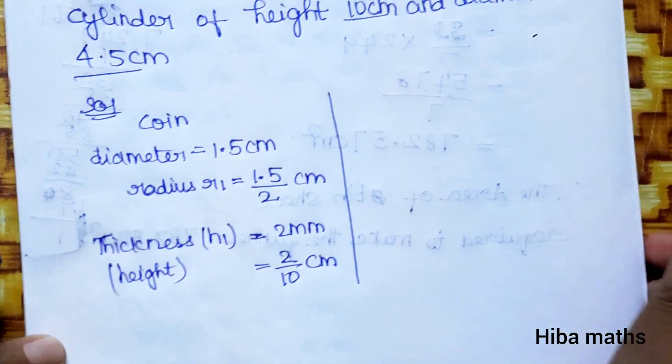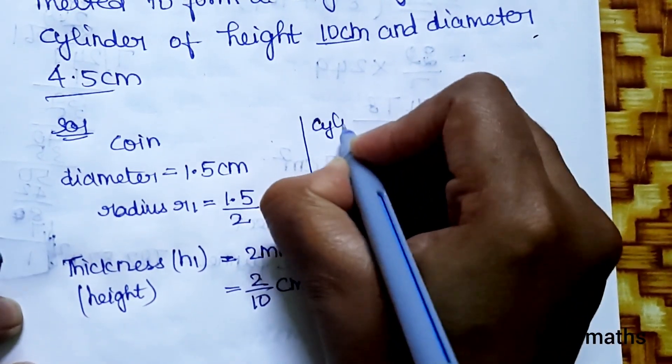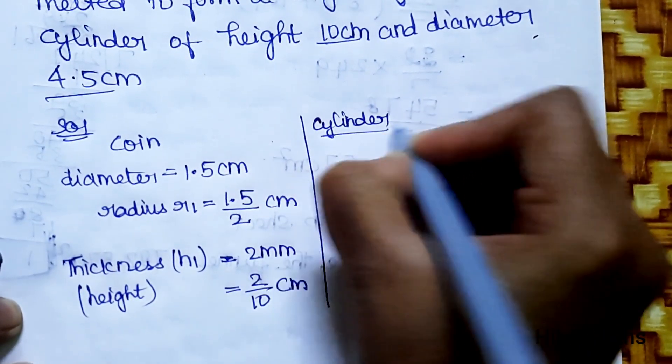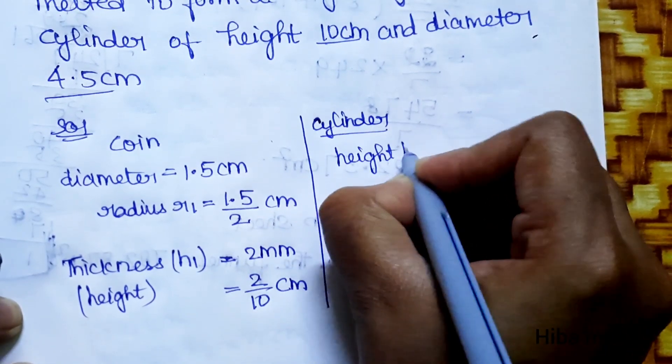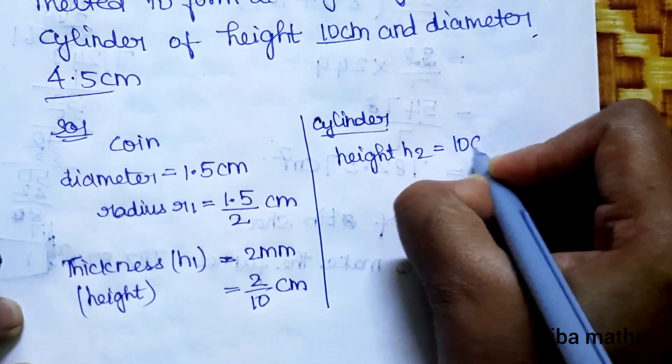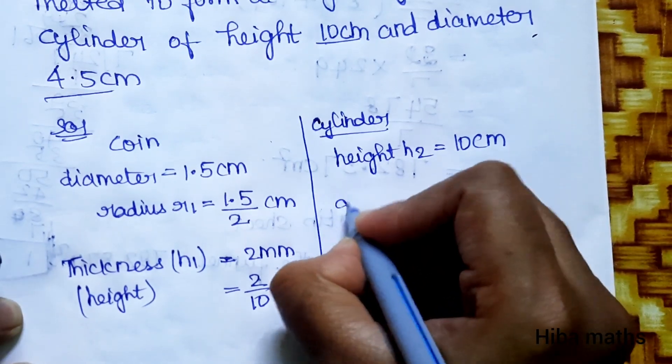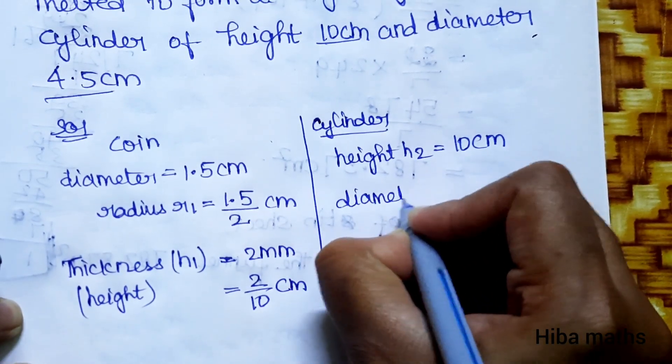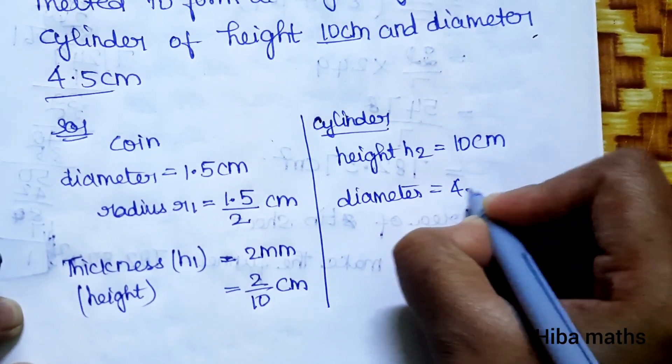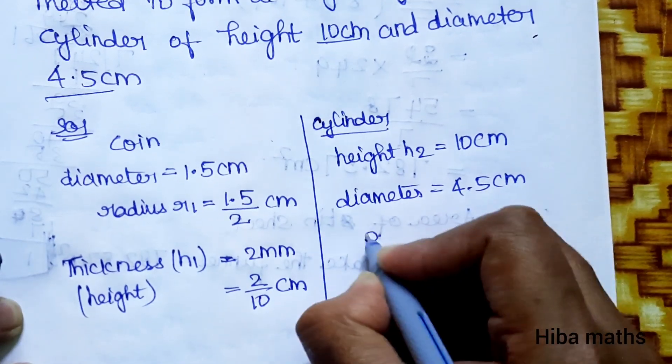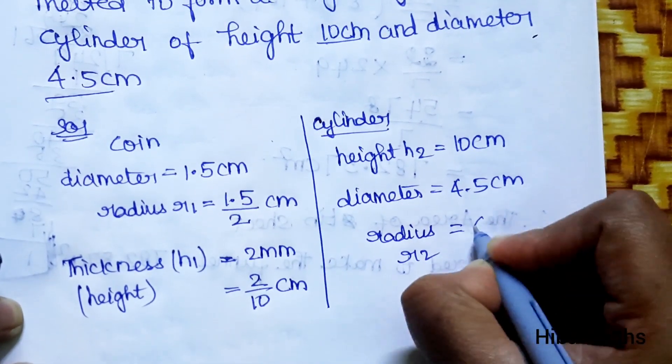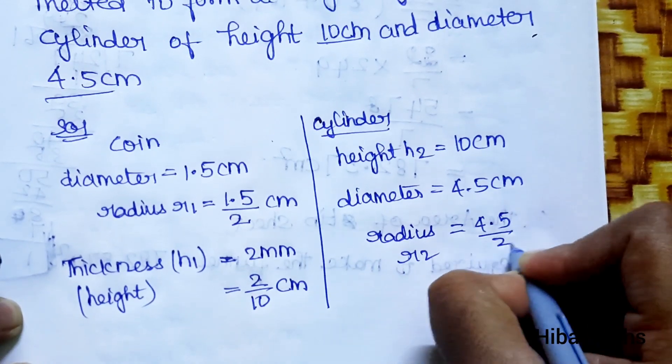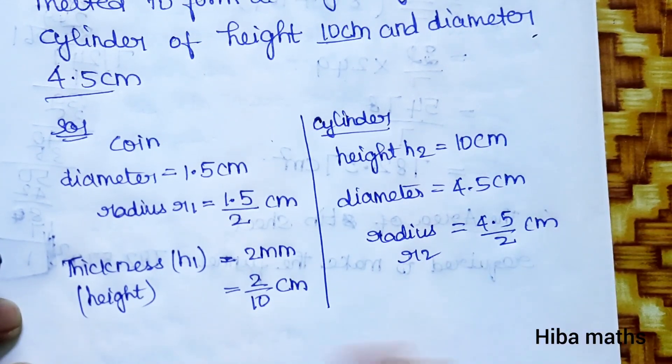This is the cylinder, the right circular cylinder. Height h2 is 10 cm. Diameter is 4.5 cm, so radius r2 is 4.5 divided by 2 cm.